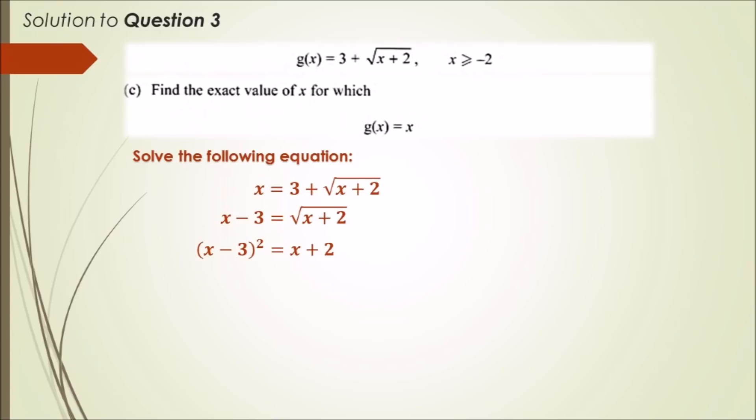Expanding the quadratic on the left gives us x squared minus 6x plus 9, and then subtracting x and 2 from the right to the left gives us the final quadratic expression: x squared minus 7x plus 7 all equal to zero. Now, using the quadratic formula, this is what we should get.